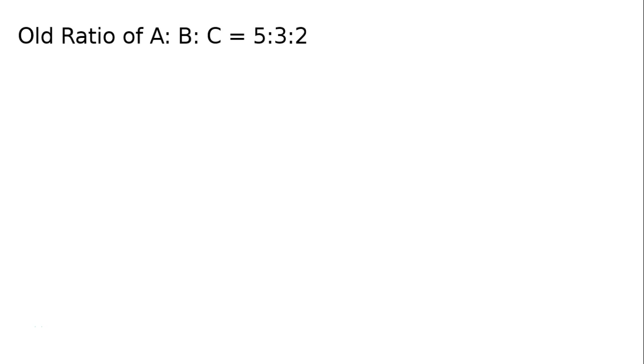A question is: A, B and C are partners sharing profits in the ratio of 5:3:2. C retires and his share is taken by A. Calculate the new profit sharing ratio of A and B.